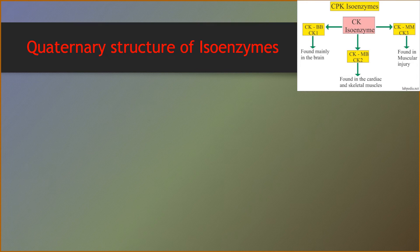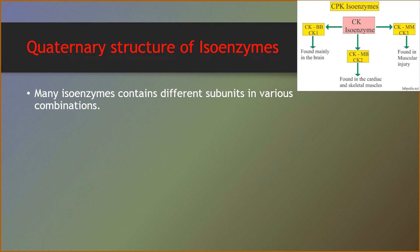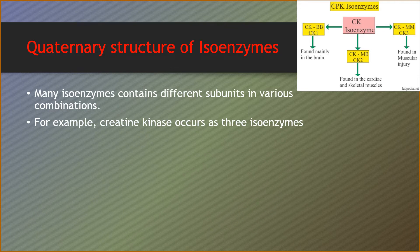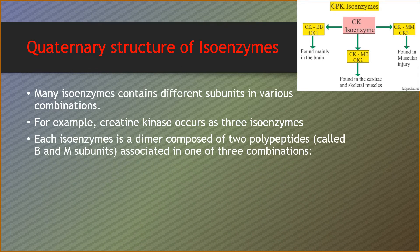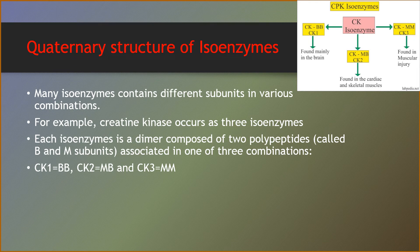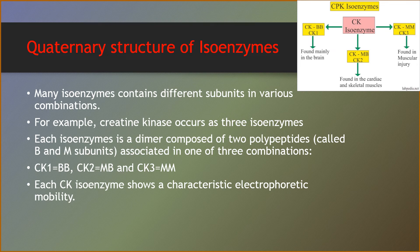Quaternary structure of isoenzymes: many isoenzymes contain different subunits in various combinations. For example, creatine kinase occurs as three isoenzymes. Each isoenzyme is a dimer composed of two polypeptides called B and M subunits, associated in one of three combinations: CK1-BB, CK2-MB, and CK3-MM. Each creatine kinase isoenzyme shows a characteristic electrophoretic mobility. CK1-BB is mainly found in the brain, CK2-MB is mainly found in the cardiac and skeletal muscle, and CK3-MM is mainly found in muscular tissue.